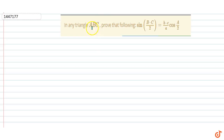The question given is: for any triangle ABC, prove that sin((b-c)/2) is equal to (b-c)/a into cos(a/2). We will use the sine rule to prove this.